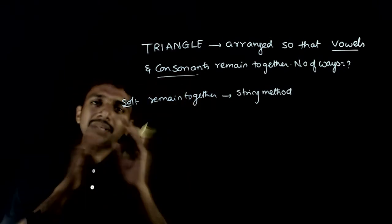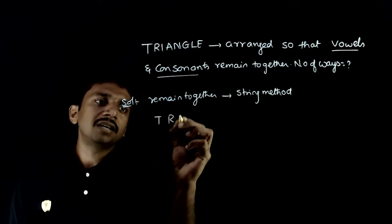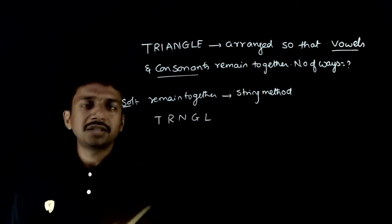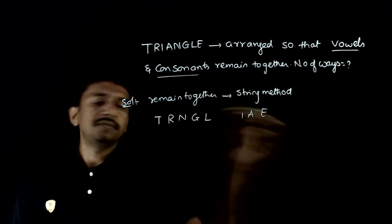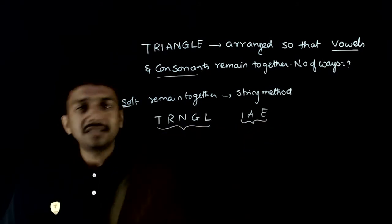This is my triangle. First, what are the consonants? T, R, N, G, L. These are the consonants. What are the vowels? I, A. So there are five consonants and three vowels.